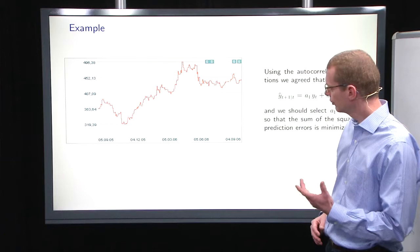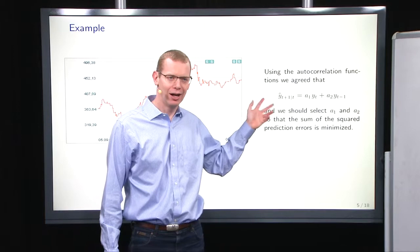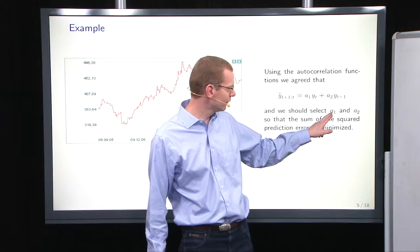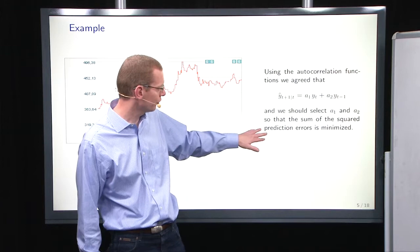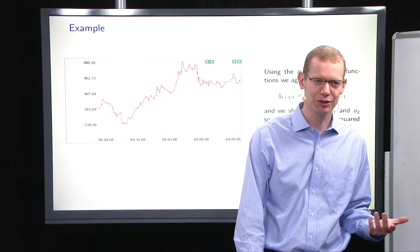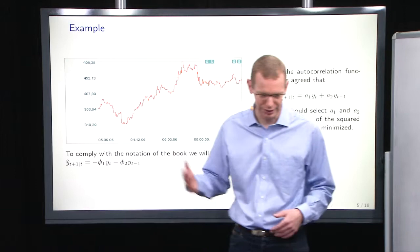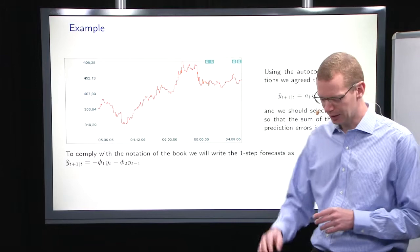As an example, we'll start here. We look at a financial time series, and from the previous analysis, we could want to estimate an AR(2) model to fit this. Now we just have to select the two coefficients, A1 and A2, so that we minimize the sum of squared prediction errors. Notice here that we have A1 and A2 being positive on the right-hand side of the equal sign. So it's not the definition in the book, but it's often used as well. We'll use the convention where we have them as negative coefficients on the right-hand side.